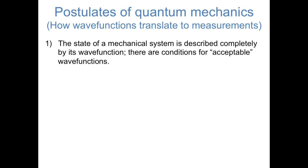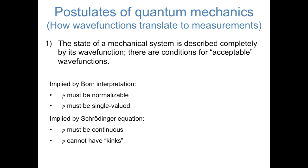The first postulate is something we've kind of talked about already: the idea that the position and the momentum of an object can be fully described by its wave function. What we haven't really talked about yet is that there are certain conditions that dictate whether a wave function is acceptable. To summarize these conditions, the wave function basically has to be a mathematically well-behaved function. Because the Born interpretation of quantum mechanics tells us that the square of the wave function is proportional to the probability of finding a particle there, we can infer that the wave function has to be normalizable.